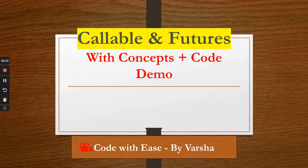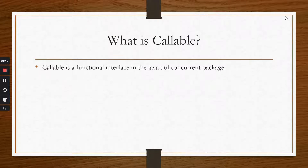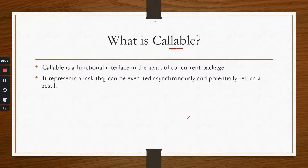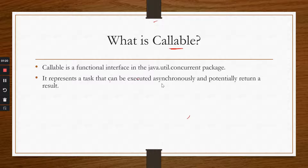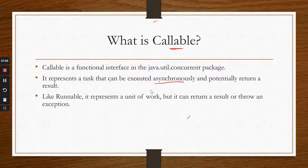Callable is a functional interface in the java.util.concurrent package. It represents a task that can be executed asynchronously and potentially return a result. Asynchronously means we don't have to wait for the result — it will be done, and we will get the result later. Getting the result is a key point. Like Runnable, it also represents a unit of work, but it can return a result or throw an exception.